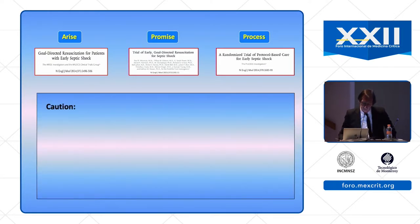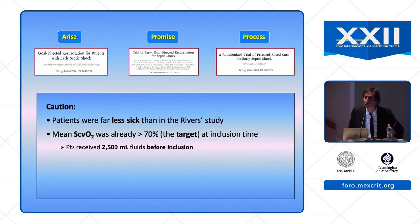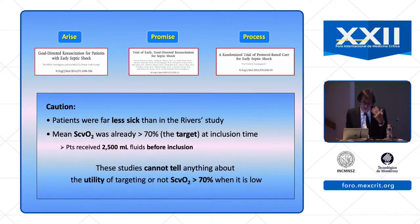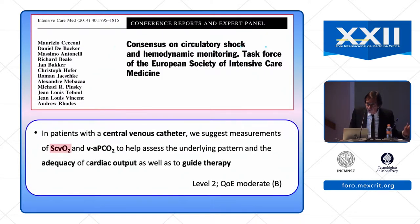We have to be cautious about this interpretation because patients in those trials were far less sick than in the Rivers study, and their mean ScvO2 was already more than 70% at inclusion time because they received a lot of fluids beforehand. Therefore, by design those studies could not show any benefit of targeting ScvO2 above 70% when it was already above 70%. This is why the European Society of Intensive Care Medicine still recommends using ScvO2 for guiding therapy.